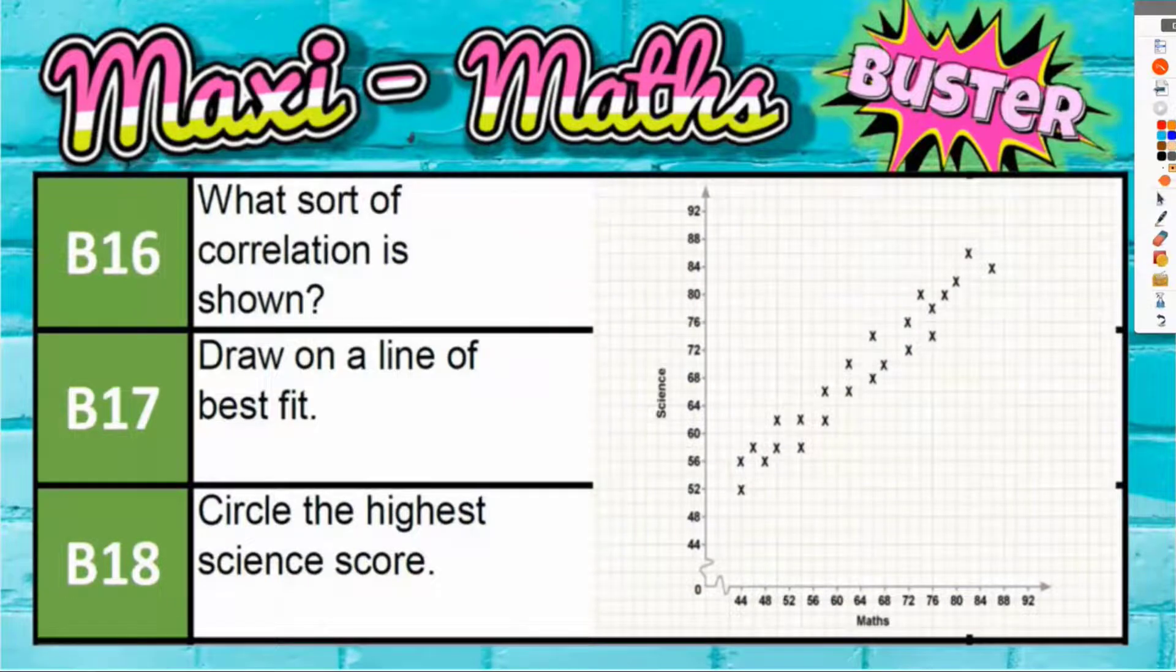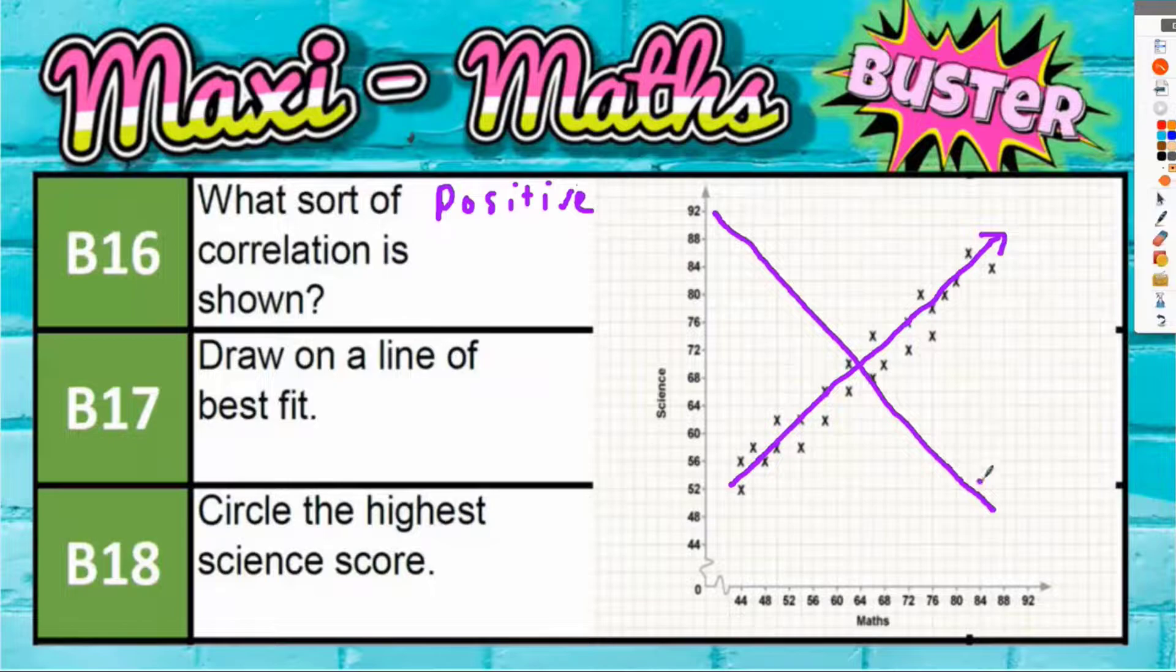Questions B16, 17, and 18 are all about scatter graphs, so we'll do these questions together. What sort of correlation is shown? Well, if the crosses are generally pointing in an upwards direction, that is called positive correlation. If they were coming down in the opposite direction like that, then that would be negative correlation, but they're not.